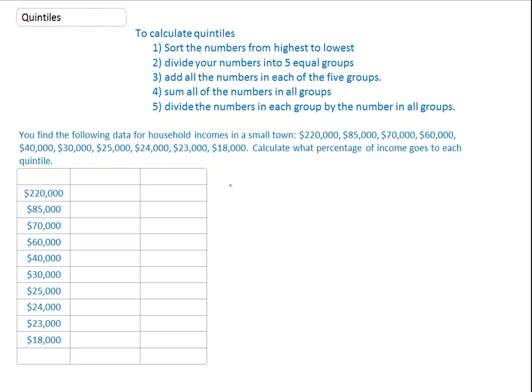So, if we have ten incomes, we're going to create quintiles. Quintile means five, so we're going to create five groups. Ten divided by five is equal to two. So, the first quintile is going to be the two people on top. The next one would be these two, and then these two, these two, and these two.